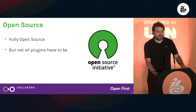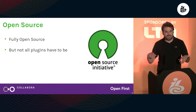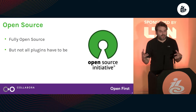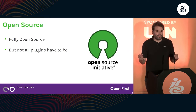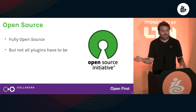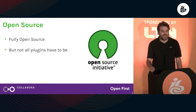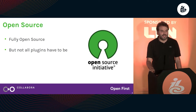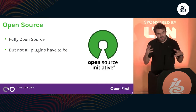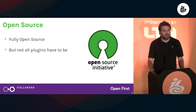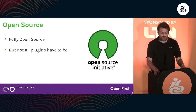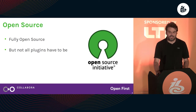GStreamer itself is fully open-source. The core of GStreamer and all the 300 plugins that come with it are open-source, but you don't have to use only open-source plugins. You can have plugins that are not open-source. There are different companies — NVIDIA would be an example — which have a proprietary plugin. You can mix them easily in your application and have pipelines that mix all these things to produce useful applications.